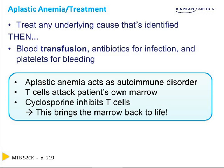Aplastic anemia acts as an autoimmune disorder. For some reason, the body's own T cells turn around and reject its own bone marrow — the T cell says 'you're not my marrow, let's get rid of you.' Cyclosporine inhibits those T cells, which is why we can use it as treatment to bring the patient's marrow back to life. In the same way we use cyclosporine to prevent organ transplant rejection, we can use it to prevent the progression of aplastic anemia, because the body's own immune system rejects itself as if it's foreign.